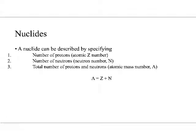Nuclides is a generic term. If we aren't certain about whether it's radioactive or what, we can just call it a nuclide. We can describe it by specifying the number of protons — the atomic Z number. We could also describe it by the number of neutrons, and we could describe it by the total number of protons and neutrons, which would be the atomic mass number.